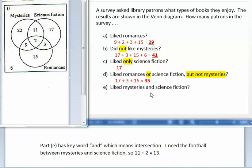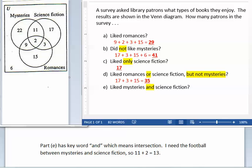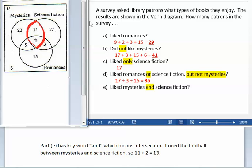Part E has keyword AND, which means intersection. Mysteries and science fiction. I need the football between mysteries and science fiction. So 11 plus 2, which is 13.